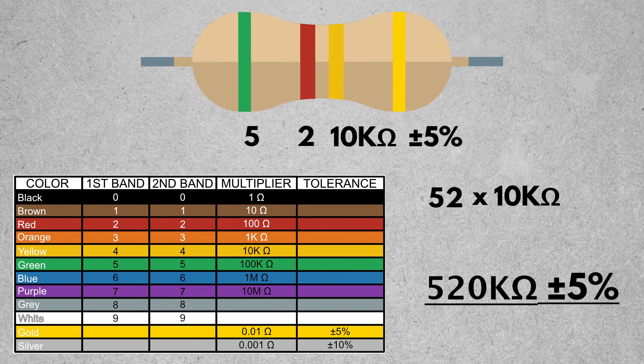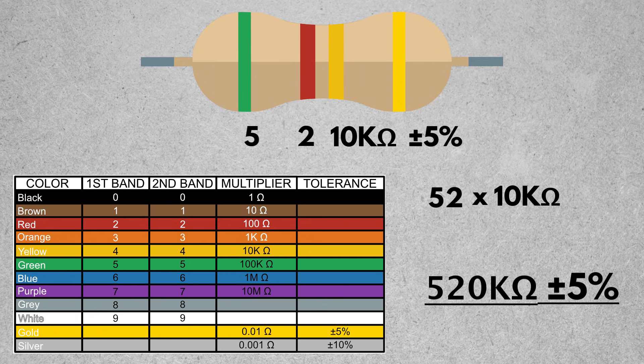So 52 times 10k is going to give us 520k ohms, plus or minus 5% for our gold part at the end.